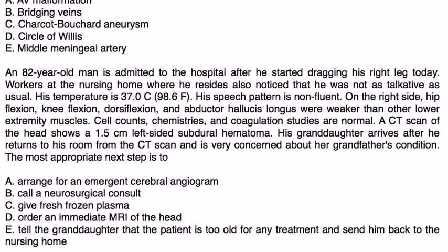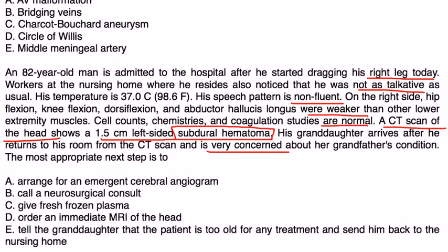Vignette 3: An 82-year-old man is admitted after he started dragging his right leg. Workers at the nursing home noticed he was less talkative. His speech is non-fluent, and on the right side hip flexion, knee flexion, dorsiflexion, and abductor hallucis longus were weaker than other lower extremity muscles. Cell counts, chemistries, and coagulations are normal. CT scan shows a 1.5-centimeter left-sided subdural hematoma. The most appropriate next step is immediate craniotomy with evacuation of the blood — a neurosurgical emergency requiring a neurosurgeon.